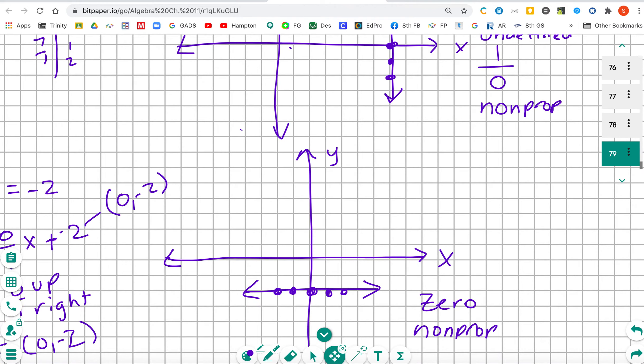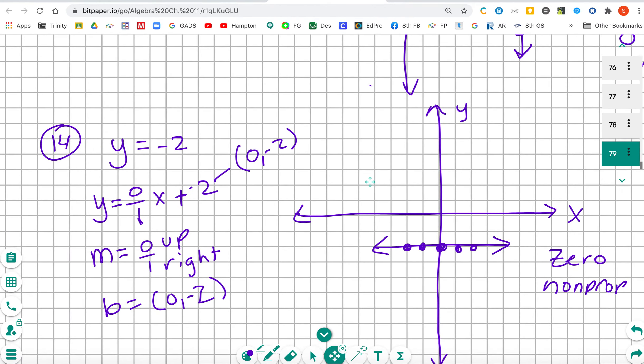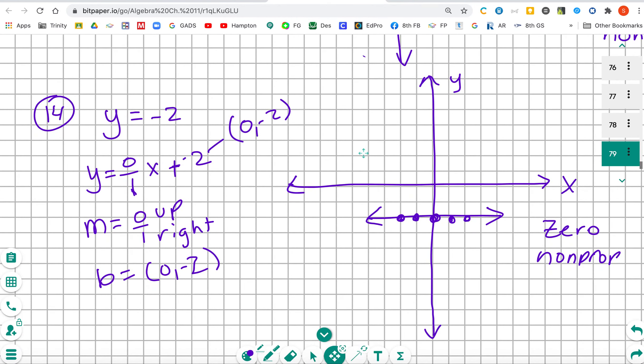And finally, the last one that you're going to be graphing is y equals negative 2. So we don't have a slope, so we can write in the slope. 0 over 1x minus negative 2, so we're going to keep change change, which gives us our starting point of (0, -2).